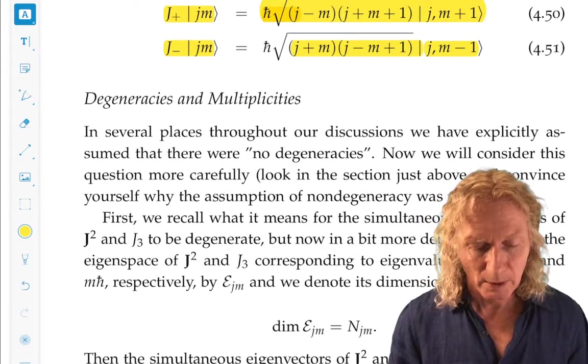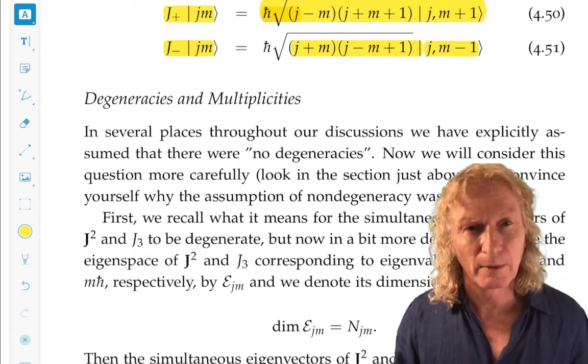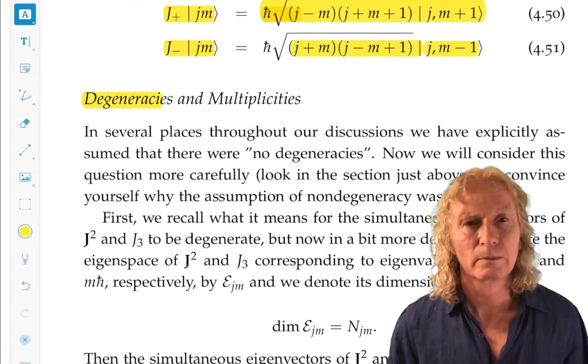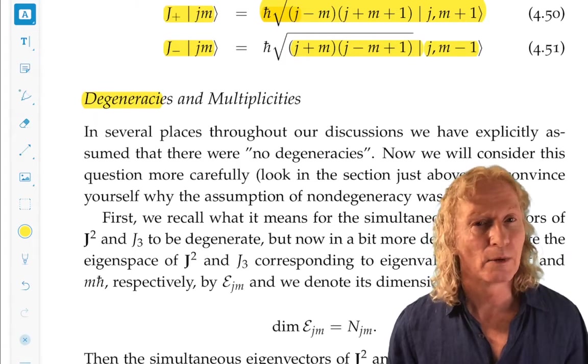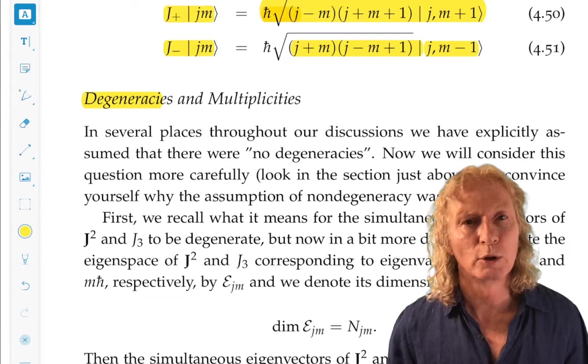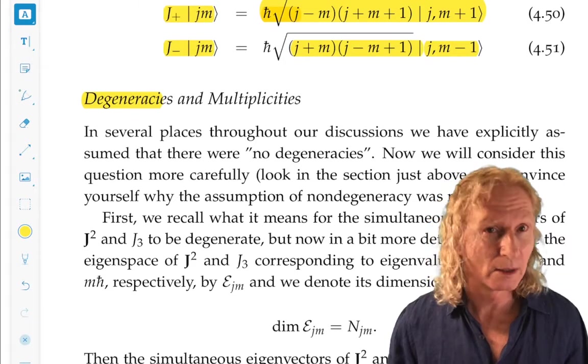Whenever we do these eigenvalue, eigenvector problems, we always have the possibility of degeneracies. That is, not enough eigenvalues or multiple eigenvectors for a single eigenvalue.